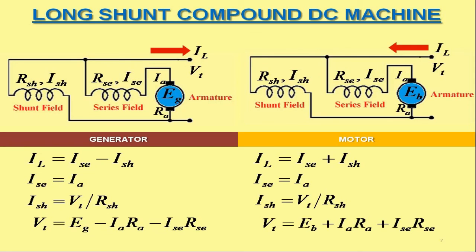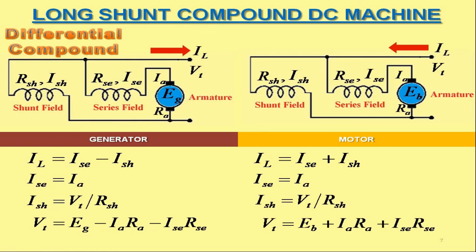In case of long shunt compound DC motor, the terminal voltage VT can be calculated by adding the armature voltage drop IA·RA together with the voltage drop in series field winding ISE·RSE into the back EMF EB. Keeping in observation the direction of the currents in shunt and series field windings of the long shunt compound DC generator, it is worth notable that the series field weakens the shunt field — therefore this particular long shunt compound DC generator is said to be differential compound.